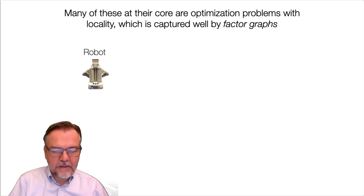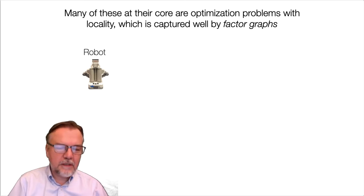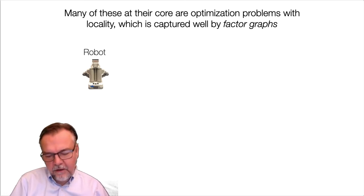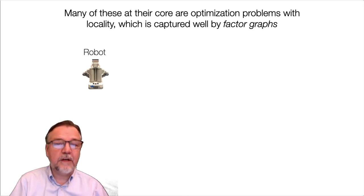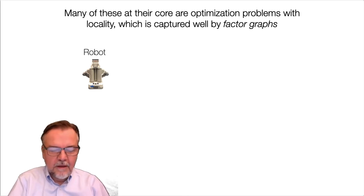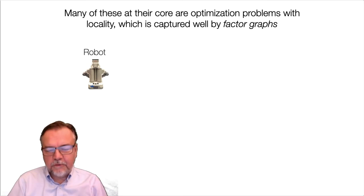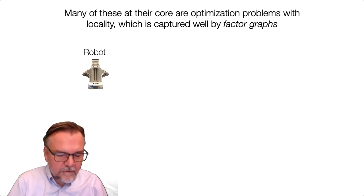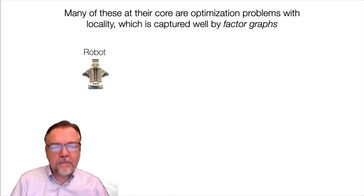Many of these tasks like navigation and planning are core problems in robotics. At their heart they have an optimization problem that is local in nature, and this locality is captured very well with factor graphs. My central claim in this talk is that factor graphs provide a lingua franca in which these very challenging aerial, underwater, and space robotics applications can be described and reasoned about in a common framework.